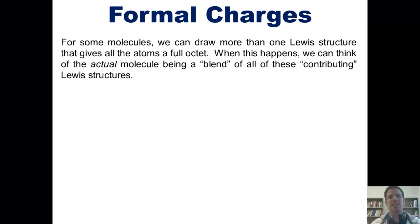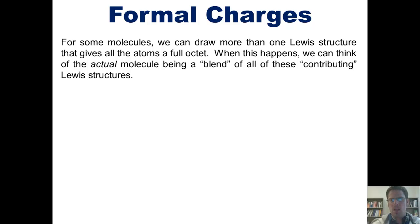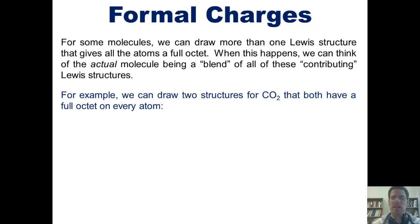We're now going to finish this chapter by teaching you about formal charges. For some molecules, we can draw more than one Lewis structure that gives all of the atoms a full octet. When this happens, we can think of the actual molecule as being a blend of all of these contributing Lewis structures. For example, we can draw two structures for CO2 (carbon dioxide) that both have a full octet on every atom, as we see here.